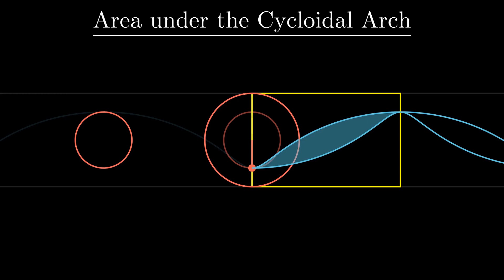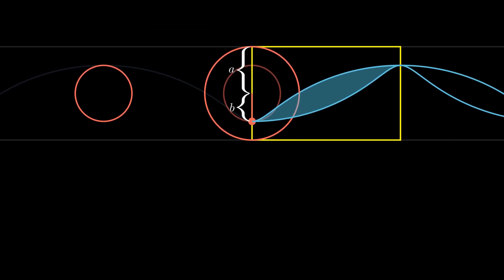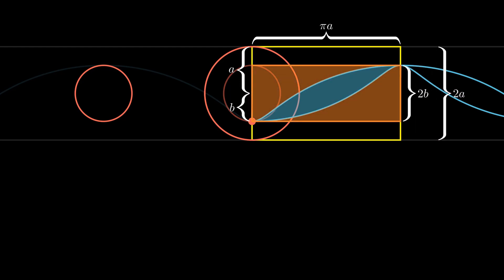The rest is now simple algebra. Let a be the radius of the generating circle and b be the distance between the center and the tracing point. Then the dimensions of both the bounding yellow rectangle and the orange rectangle are obvious. We just found out that the area of the blue region is the same as that of the smaller circle. Using this and the area of the orange rectangle, we can find the area of the orange region as well.